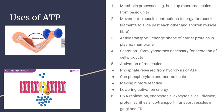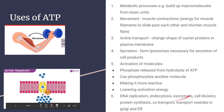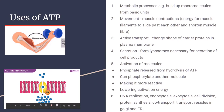Other examples of how ATP is used in our body include DNA replication, endocytosis and exocytosis, cell division, protein synthesis, co-transport (a type of active transport), and transport vesicles in the Golgi apparatus and endoplasmic reticulum. ATP is a very important molecule in our body and we would not be able to survive without it.